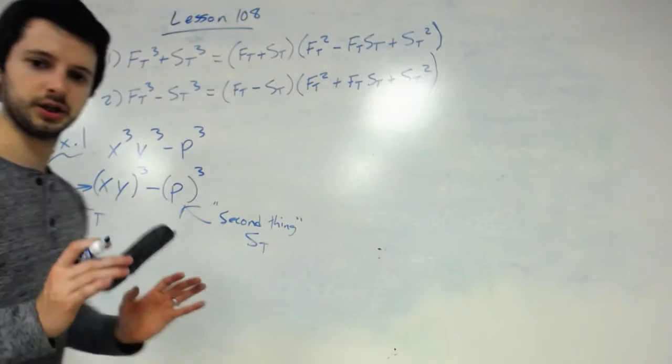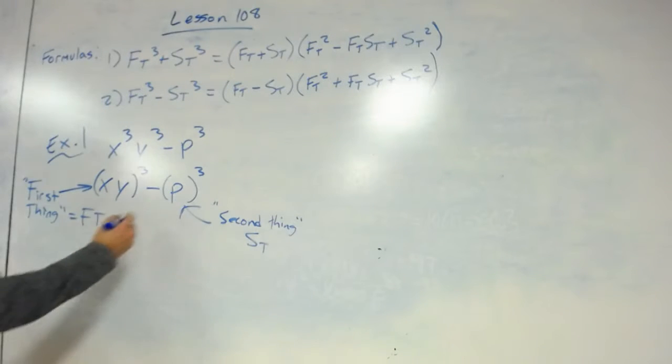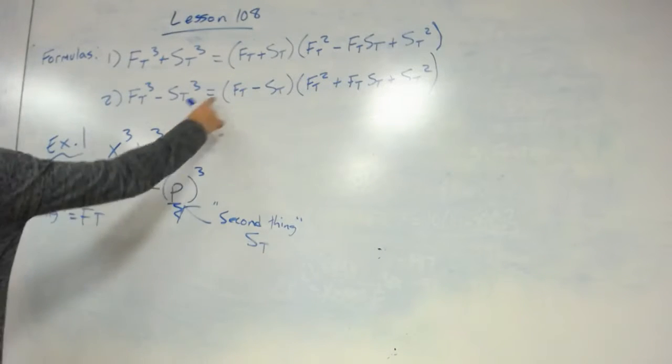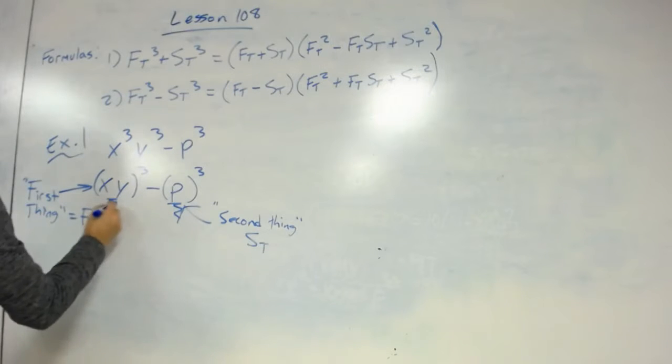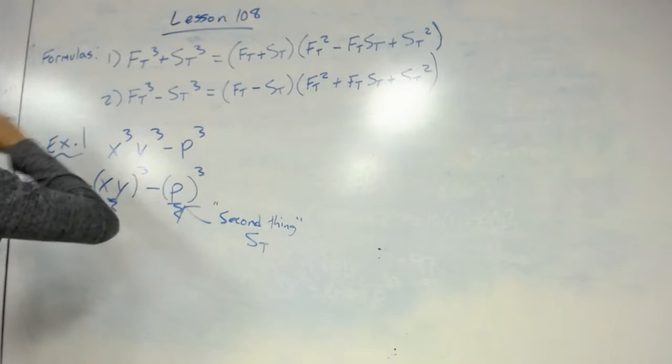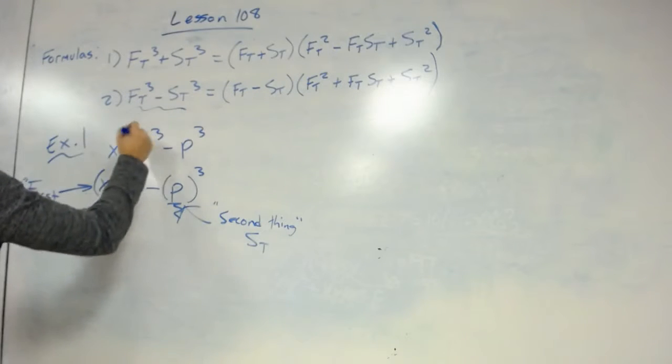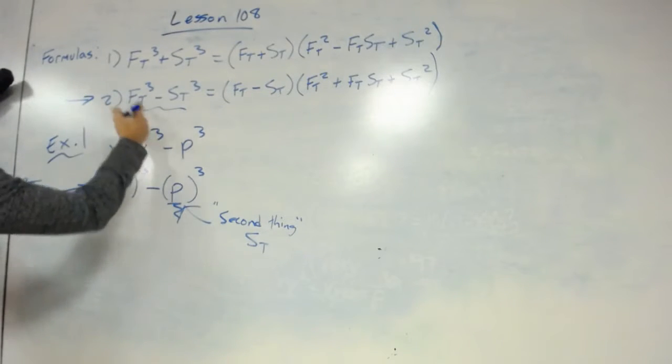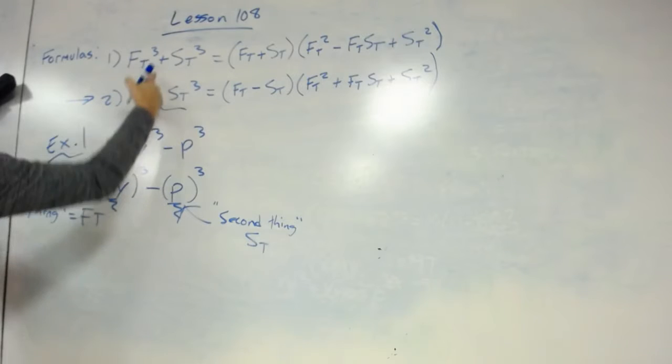So literally all you're going to do is plug in that for all the Sts, plug in this, plug in the xy for all the Fts. So it can look like, now this overall is just, you can write this portion. First of all, we're using formula 2. The only difference between these is if it's added or subtracted.